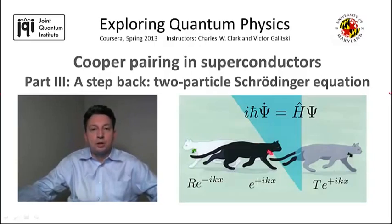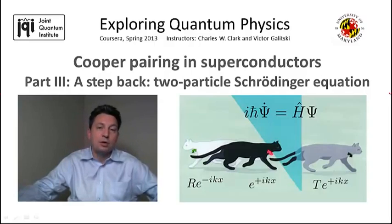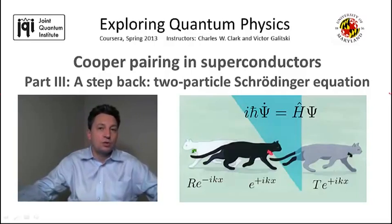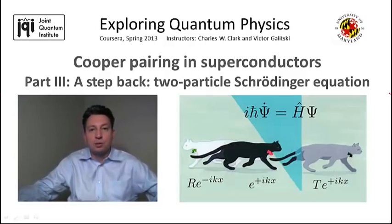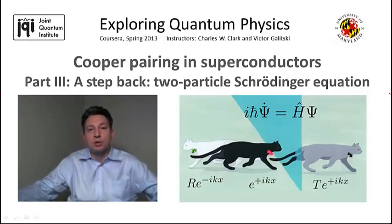This connects to the calculations from the previous lecture where we were studying particles in various potentials. There we dealt with single particle quantum mechanics — an externally imposed potential in which a single particle was moving. Now we want to study the two-particle problem, describing two electrons near the Fermi surface in the context of superconductivity.